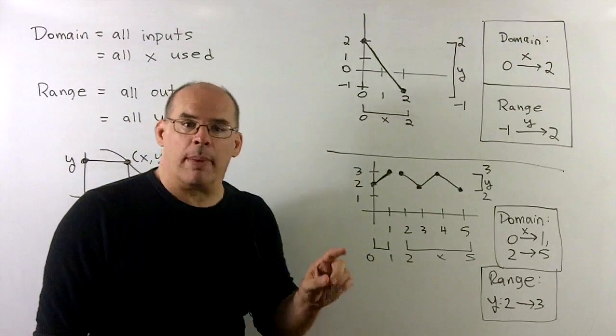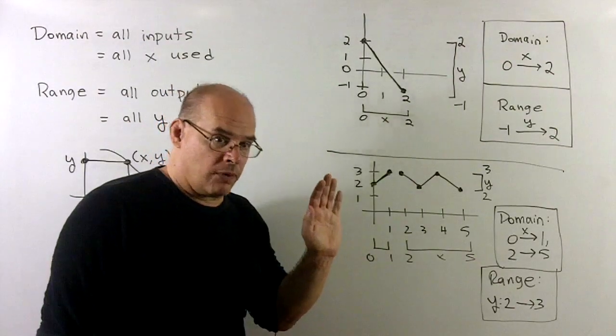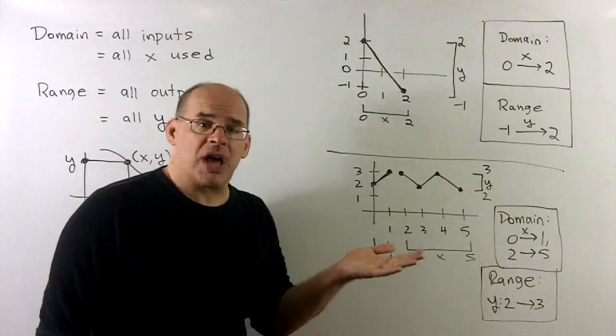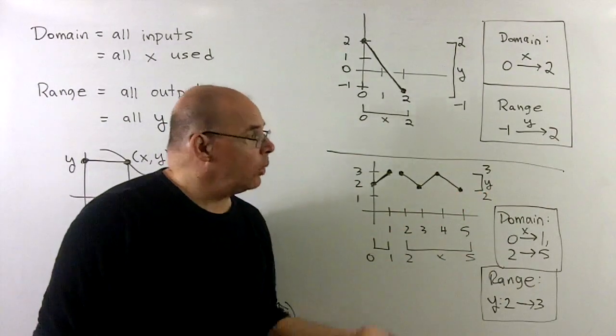That's a simple example. Just remember, verticals go left to right. Horizontals go from below to above.